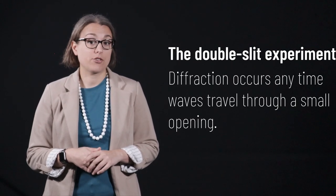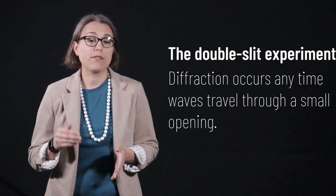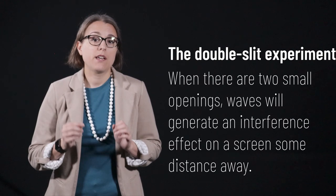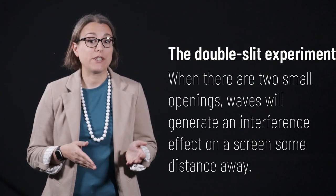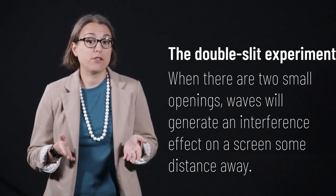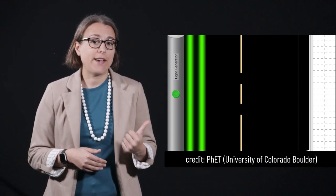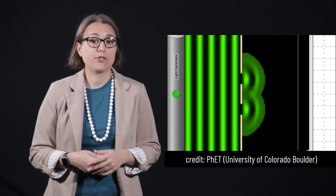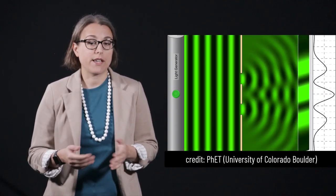As discussed in lecture 29, diffraction of waves occurs any time these waves travel through a small opening. If there are two small openings, diffraction will lead to an interference effect, leading to bright and dark spots on a screen some distance away. This FET simulation demonstrates that diffraction interference pattern with light. This is a very wave-like phenomenon.